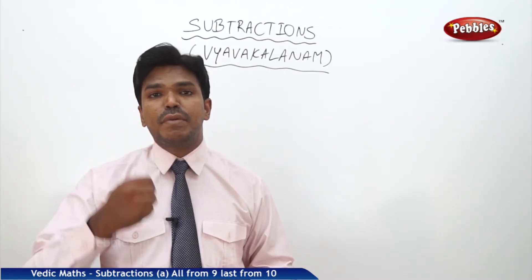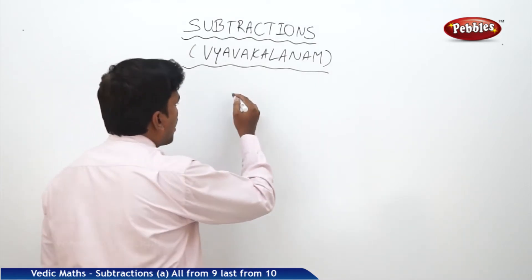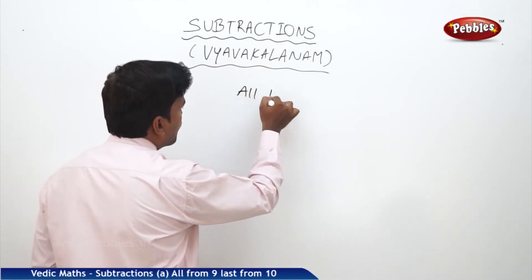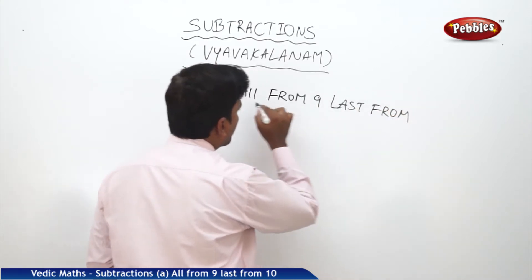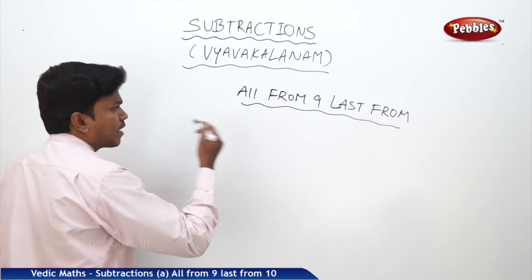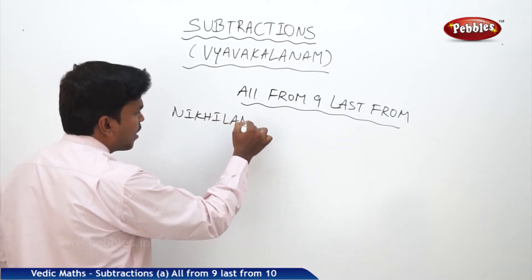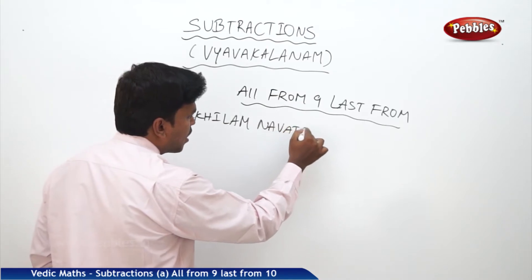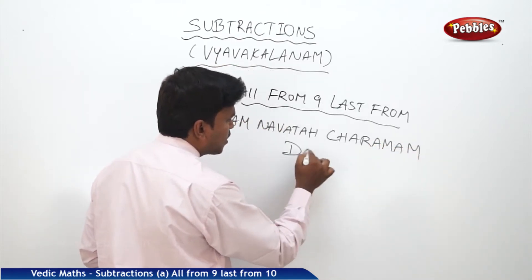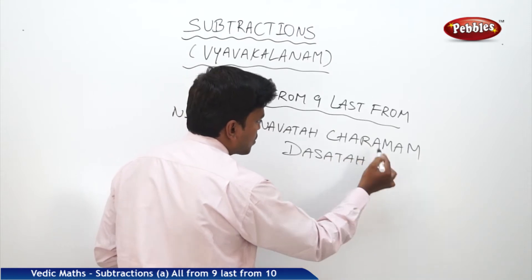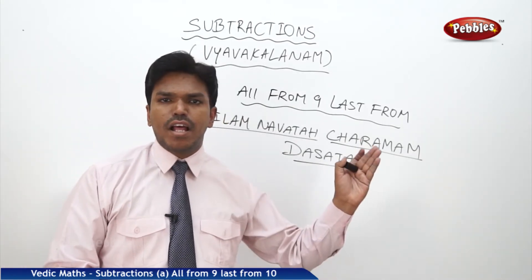There are nearly three methods in our subtractions we have to follow. First, let us discuss the basics. The first basic is called 'All from Nine, Last from Ten.' In Sanskrit terminology, we call it Nikhilam Navataha Cheramam Dasataha, which means 'All from Nine, Last from Ten' in English.